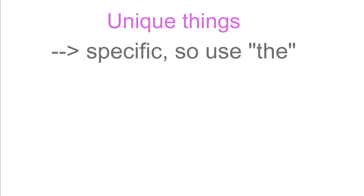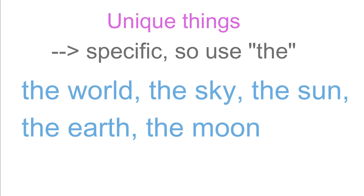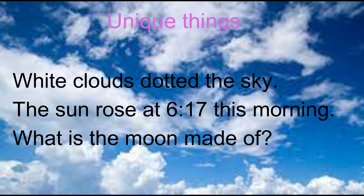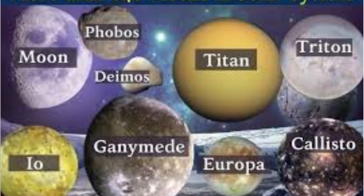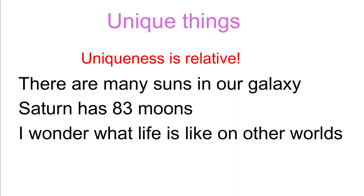Unique things. Things that we think exist uniquely are specific, and so 'the' can be used. For example: the world, the sky, the sun, the earth, the moon. 'White clouds dotted the sky.' 'The sun rose at 6:17 this morning.' 'What is the moon made of?' Uniqueness is relative — the sun and the moon are unique from the earth's point of view. From another galaxy or another planet, the objects by those names are not unique. So we can say: 'There are many suns in our galaxy.' 'Saturn has 83 moons.' 'I wonder what life is like on other worlds.'